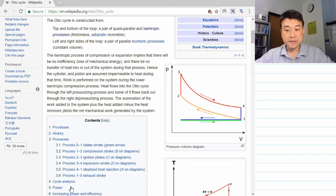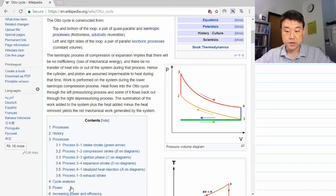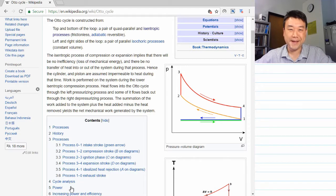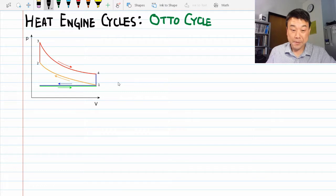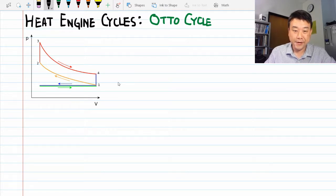So for our analysis, what's important are these processes connecting each of the steps: adiabatic compression, isochoric heating, adiabatic expansion, and isochoric cooling. And we'll ignore all the other technical details for the time being. Back to our notebook. I copied the PV diagram from the Wikipedia page so that I don't have to redraw it.